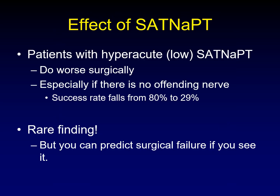Here's the clinical pertinence of a sagittal angle of the trigeminal nerve. Patients with a hyperacute — that is, a smaller value — hyperacute sagittal angle of the trigeminal nerve at the porous trigeminus do worse surgically, especially if you don't find an offending artery to perform the microvascular decompression on. The success rate falls from that 80% mentioned earlier down to 29% in patients who are three standard deviations below average on their sagittal angle.